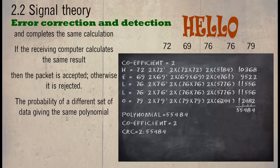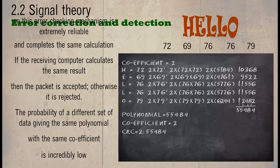The probability of a different set of data giving the same polynomial with the same coefficient is incredibly low, so this error checking mechanism is extremely reliable.